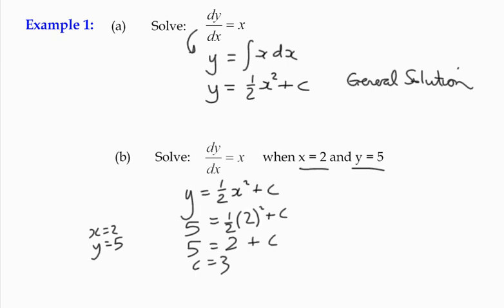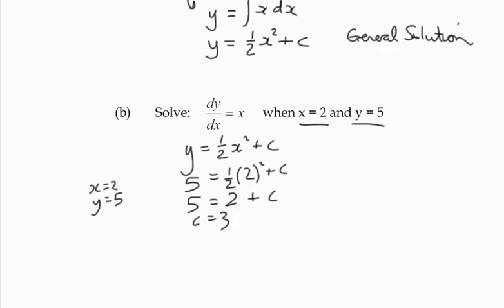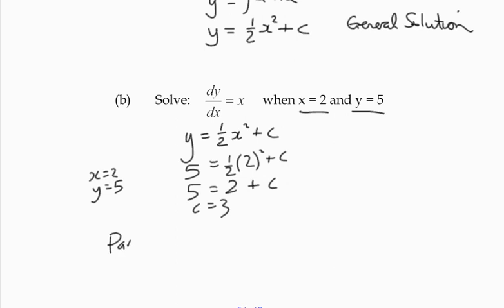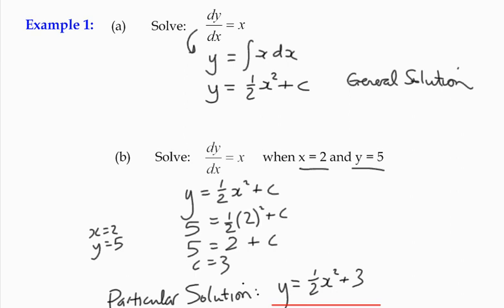And if that's the case, then I can come up with a particular solution, which tells me that y is equal to half x squared plus 3. And there's my particular solution. So that's a super straightforward differential equation. Just to get the ball rolling here, we can make a general solution with a constant of integration. With a bit more information, we can find our particular solution.